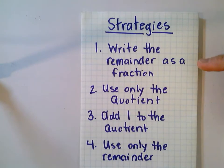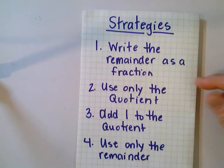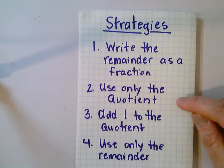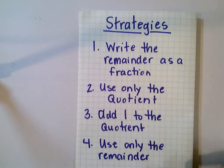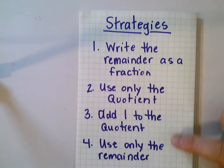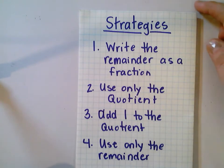The first strategy would be to write the remainder as a fraction — that's when we can share our remainder with all the groups that we make. The next strategy would be to only use the quotient and not use the remainder at all. Another strategy would be to add one more to our quotient. And the last strategy would be to only use the remainder, depending on what the question is asking us to do.